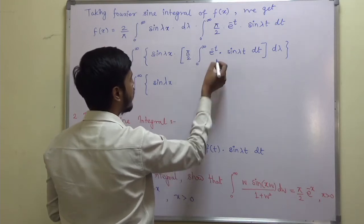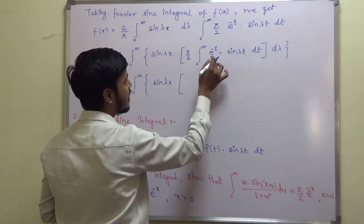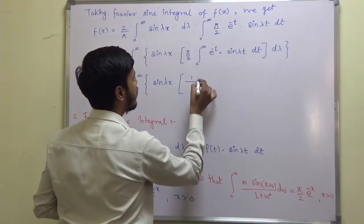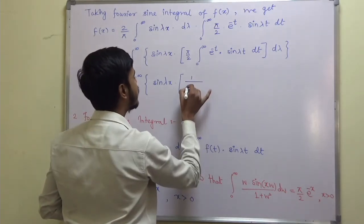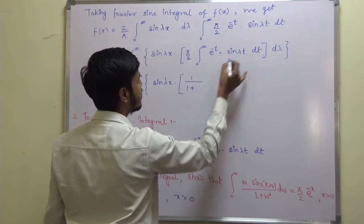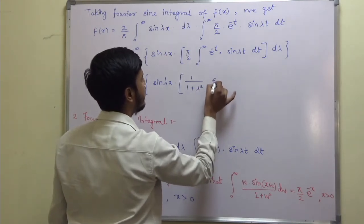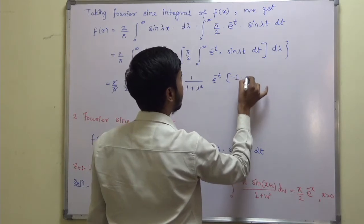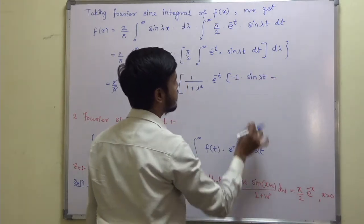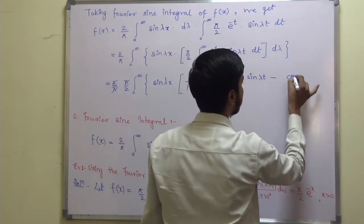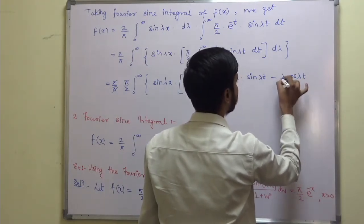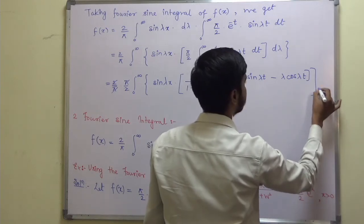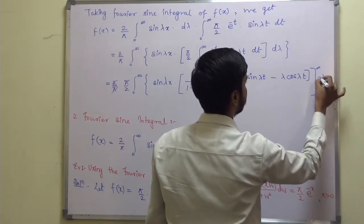Applying the integration by parts special formula, we get: integral from zero to infinity e^(−t) sin(λt) dt = [1/(1 + λ²)] × e^(−t) × (−sin(λt) − λ cos(λt)), evaluated from zero to infinity.